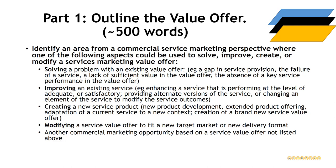In 500 words, outline the value offer — whether you're solving, improving, creating, or modifying. Give me context: what it is, what it does, how it provides value to a customer, and any context I'll need to understand it. Is it from a small or large company? Is it part of a bigger product portfolio or the company's first offering? Think about what I need to know for it to make sense to me as a reader and communicate that in 500 words.